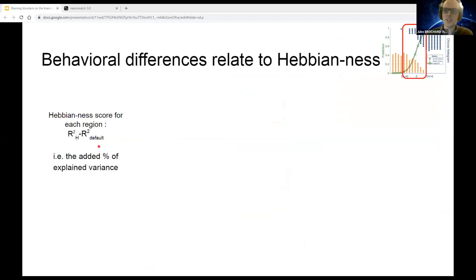We built a Hebianness score for each of these regions, which is simply the added value of using a Hebbian network versus a default static network to describe the similarity matrix, the geometry if you want, of the representation in these regions.